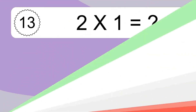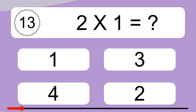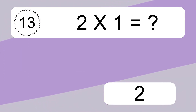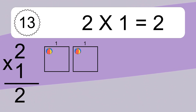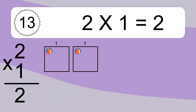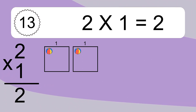2 times 1 equals what? 2 times 1 equals 2. We have 2 boxes and each box has 1 colorful ball inside. If you count all the balls in all the boxes together, you will have 2 times 1 balls. This equals 2 balls.